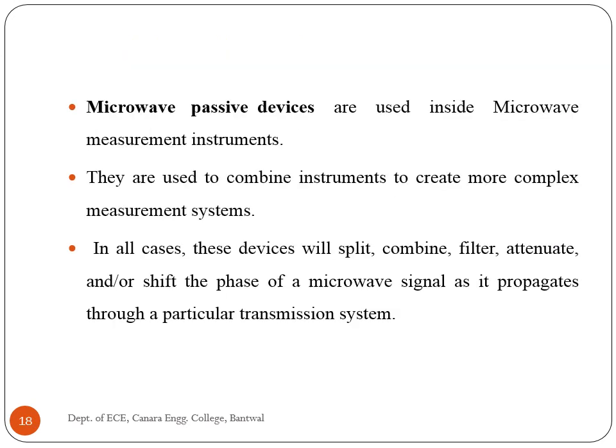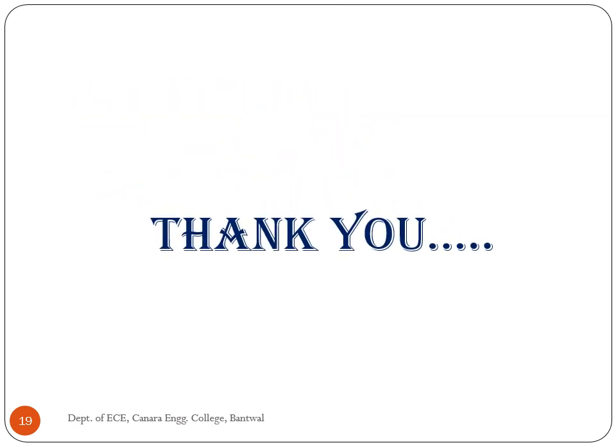Microwave passive devices are used inside microwave measurement instruments and to combine instruments to create more complex measurement systems. In all cases, these devices will split, combine, filter, attenuate, and shift the phase of a microwave signal as it propagates through a transmission system. The performance and operation of most microwave objects are commonly described using network parameters determined by measurements or theory or both. In this class, information will be given on how network parameters are defined and the properties associated with microwave networks.